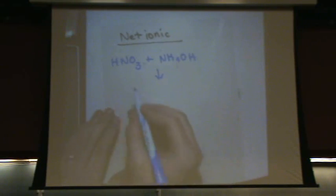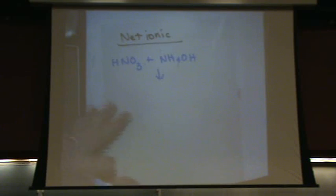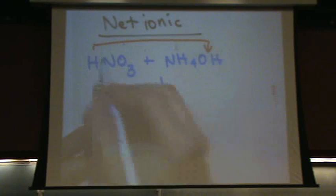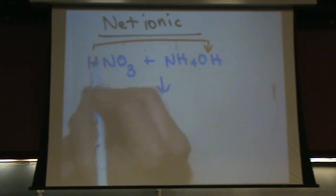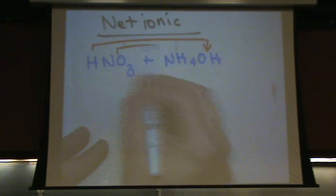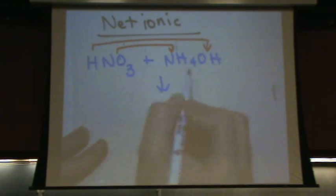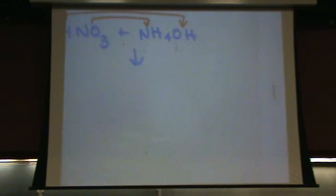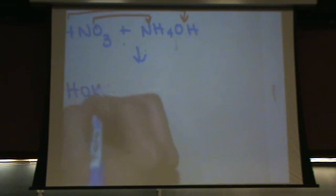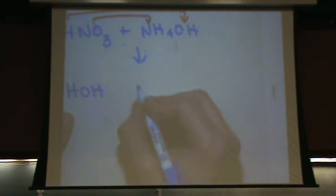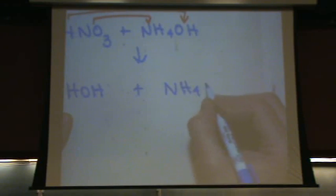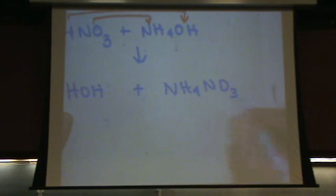You have two ionics. The H, the cation, will go with the anion of the other one, and the anion of the first will go with the cation. So when we write this out, we'll get HOH — some of you know that is water — and NH4NO3, ammonium nitrate.